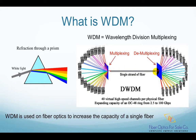Traditionally, only one colored light was used on a single strand of fiber to carry information, such as 1550 nanometer light. However, starting from the early 1990s, the internet boom pushed service providers to find a method to increase the capacity on their network in the most economical way. That is when WDM devices were invented.